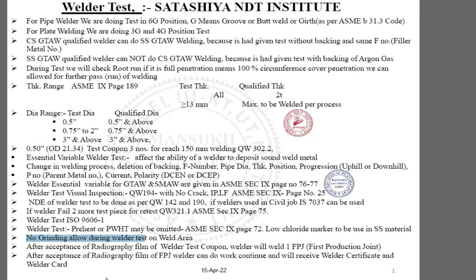After acceptance of the radiographic film of a welder test coupon, normally we send the welder to site and ask them to do one FPJ (first production joint) at site. After the first production welding at site, we do radiography and check it. If the radiography of the FPJ joint is okay, we allow the welder to do work at site and issue a welder certificate as well as a welder card.